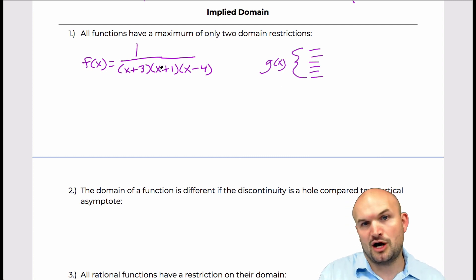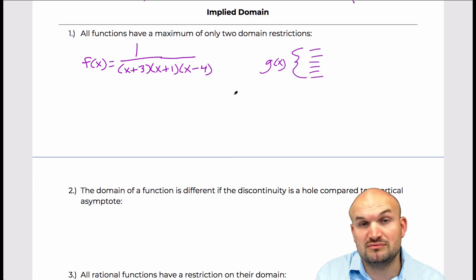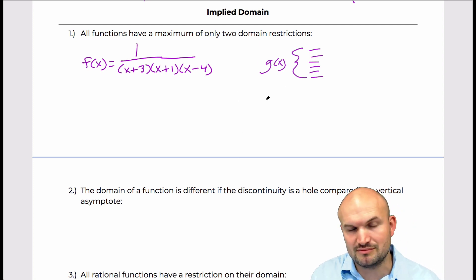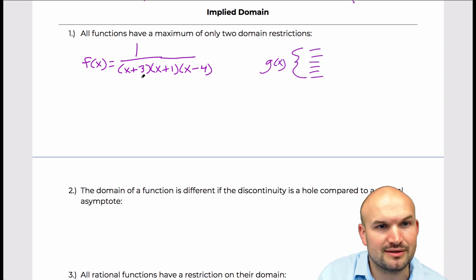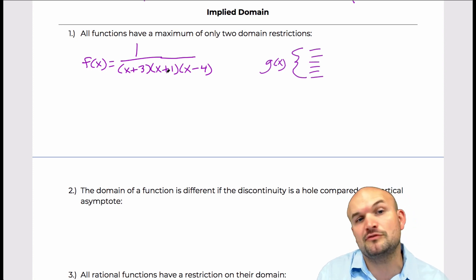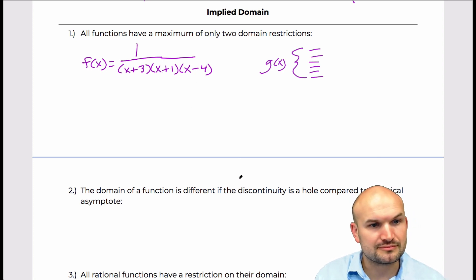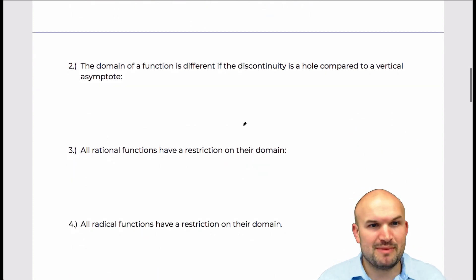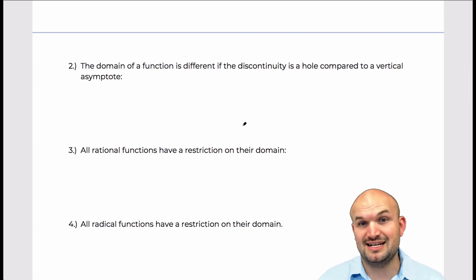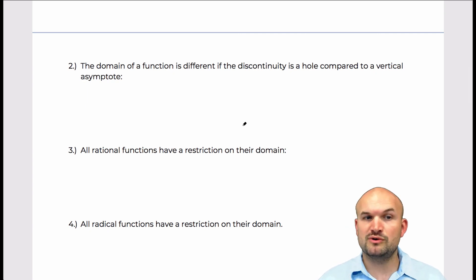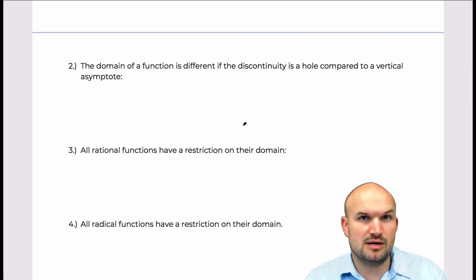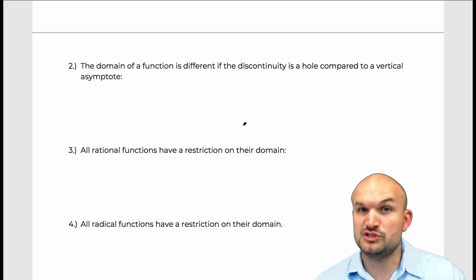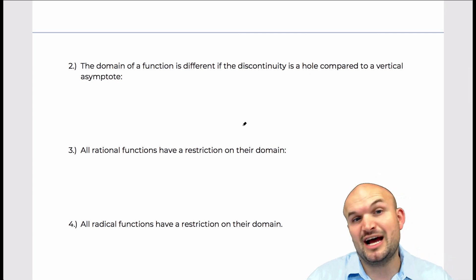And here are two examples of functions that have multiple restrictions. Obviously this is just an example, but you can see here we have three domain restrictions. The next misconception is: the domain of a function is different if the discontinuity is a hole compared to a vertical asymptote. This usually comes about when students are working on this algebraically.